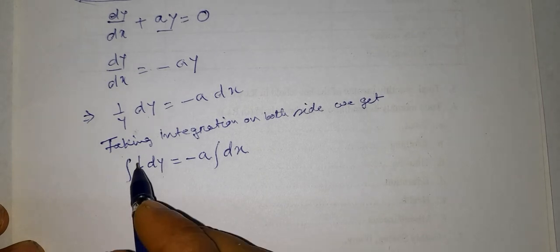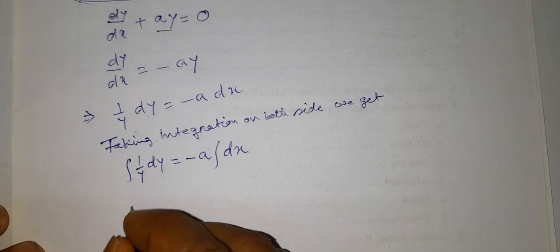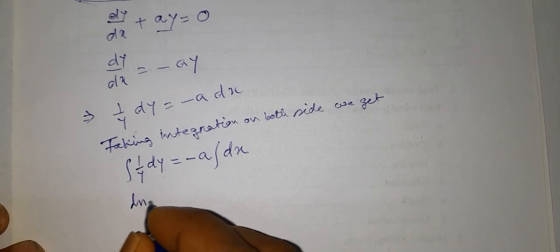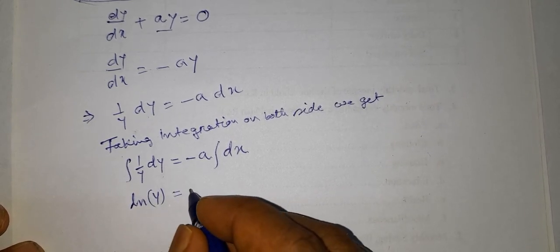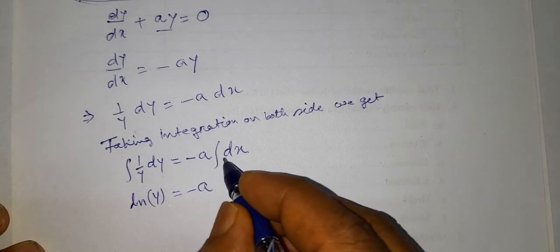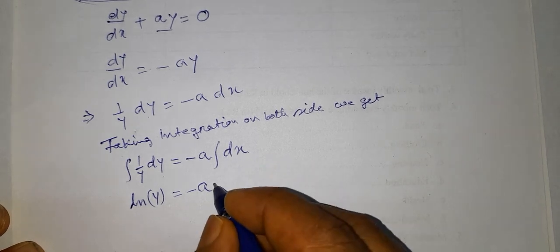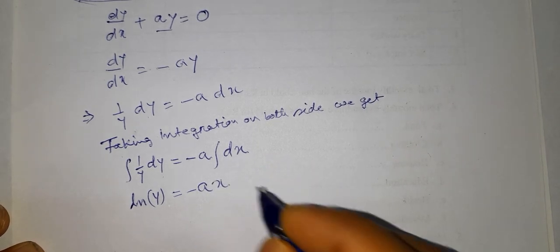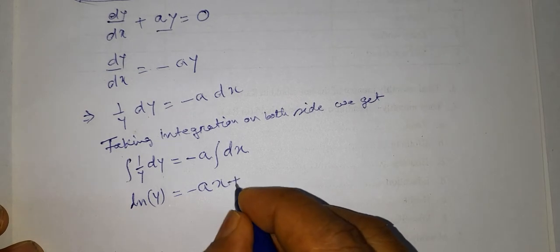The integration of (1/y) dy is equal to the natural log of y, equal to -a times the integration of 1 with respect to x, giving us -ax + k.